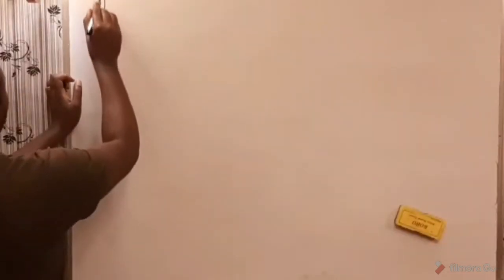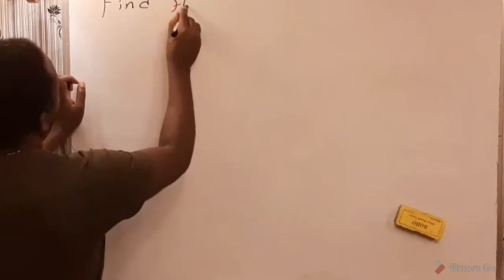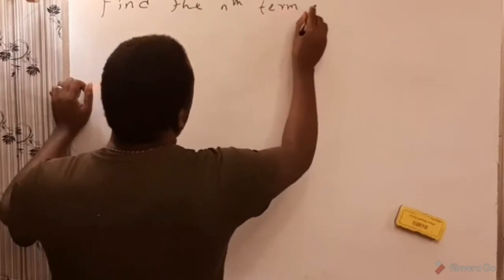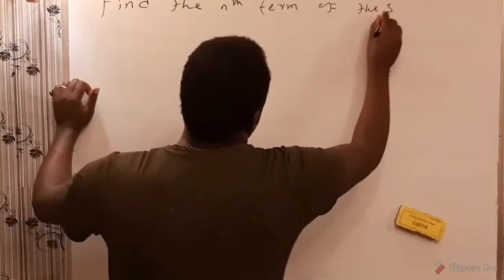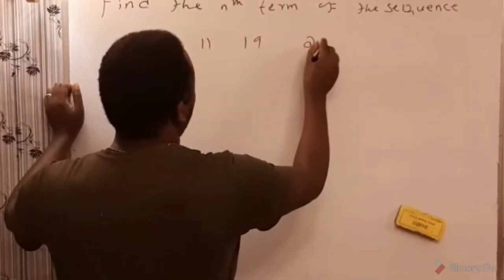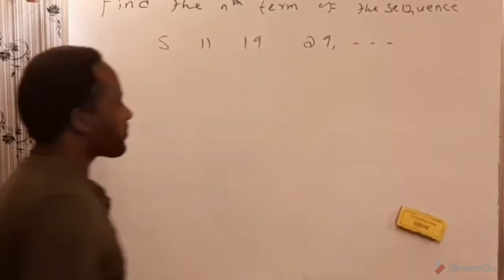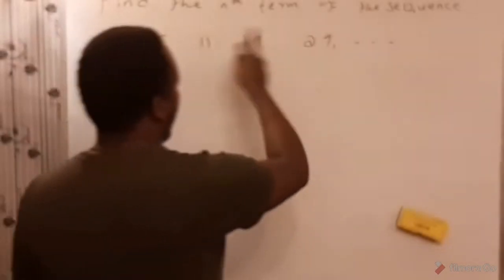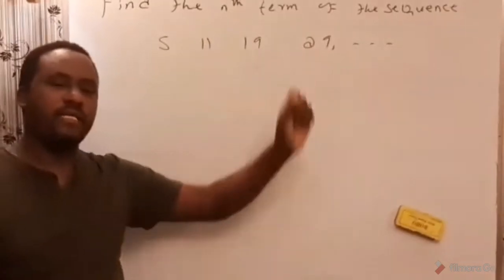Now let's find the nth general term for the sequence 5, 11, 19, 29, ... In order to determine the general term for the sequence, first of all you have to know what kind of sequence it is.